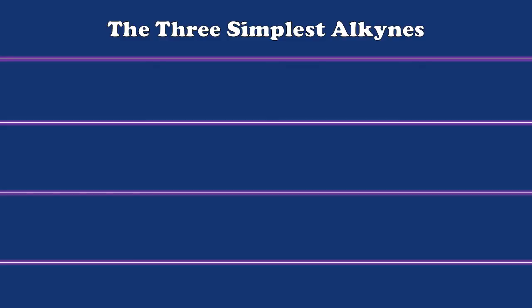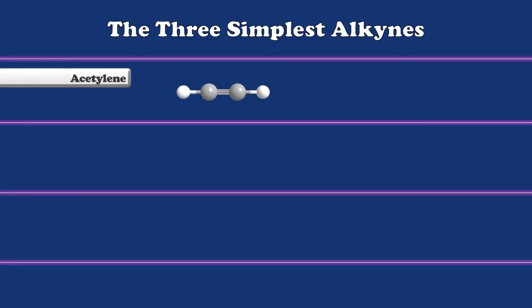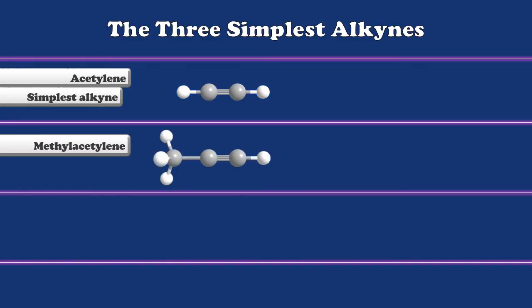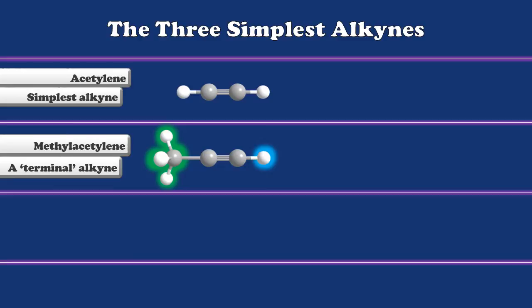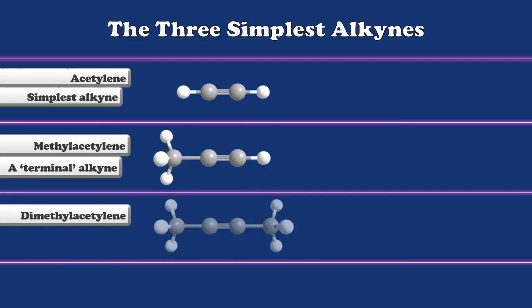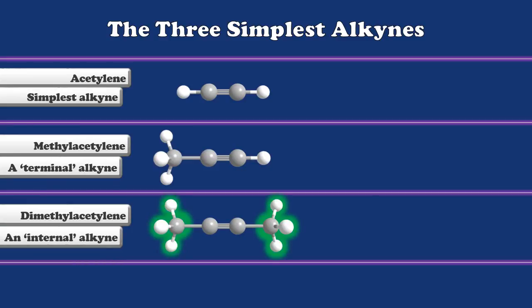Now let's look at alkynes, which are defined as hydrocarbons containing a carbon-carbon triple bond. The simplest of all alkynes is acetylene, which contains two carbon atoms joined by a triple bond — the only things joined to the carbons are hydrogen atoms. Adding an additional carbon gives us methyl acetylene, which we call a terminal alkyne, because the triple-bonded carbons are at the end of the chain. There is one R group in the form of a methyl, highlighted in green, and one hydrogen attached to the triple-bonded carbons. Our next simple alkyne is dimethyl acetylene, which would be called an internal alkyne, because it contains two R groups — one bonded to each of the two alkyne carbons.